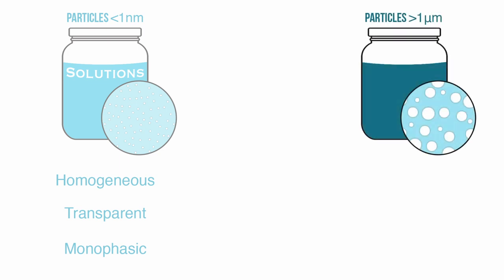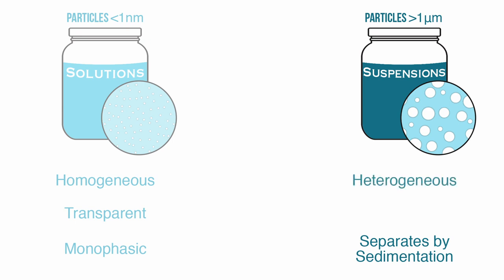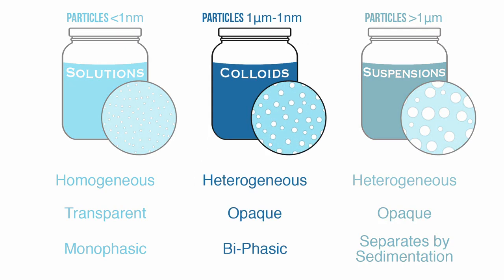On the other hand, dispersions in which the dispersed particles are very large — greater than one micrometer — are known as suspensions, with the most common example being sand mixed in water. Unlike solutions, suspensions have particles so large that they separate from the mixture just by gravity alone through sedimentation. Suspensions are heterogeneous, with two visibly separate phases, and they look opaque or cloudy on transillumination because the solid particles scatter light. However, if the dispersed particles in a mixture are between one nanometer and one micrometer, then the size is just right for a colloid. Colloids are dispersions in which the dispersed particles are large enough to form a heterogeneous mixture that can scatter light, but too small to precipitate out of the mixture. Colloids are defined by the states of their dispersion medium and dispersed phase, and there are several different possible combinations.